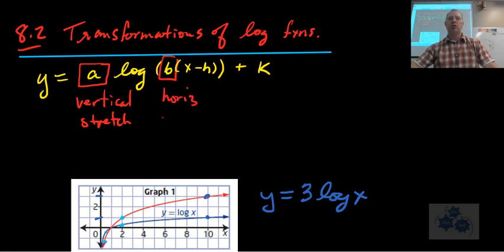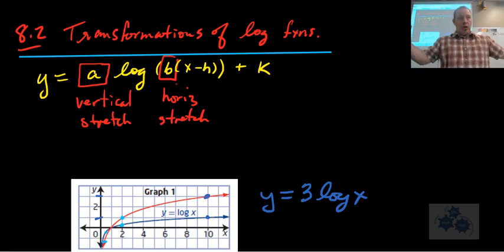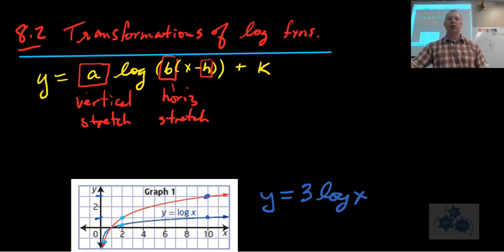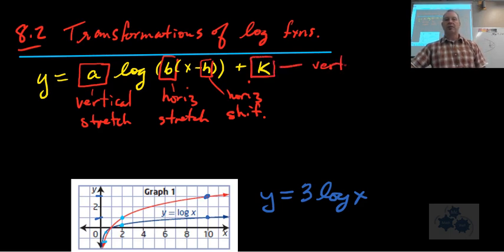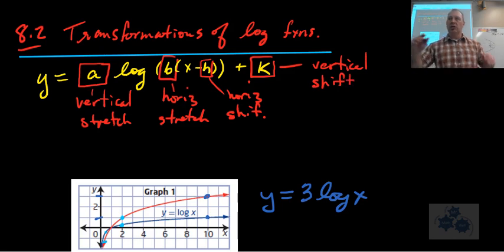It's the horizontal stretch, that's right. And so B acts the opposite way. If B is greater than 1, that means it's actually compressed in towards the y-axis. If it's between 0 and 1, it stretches out from the x-axis. What about H? H represents a shift. Okay, in which direction? Vertical or horizontal? Right. This is a horizontal shift. So it moves it left or right. The whole graph stays intact. It doesn't stretch, it just moves it left or right. And K, what does K do to the graph?